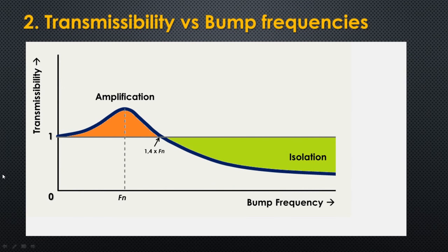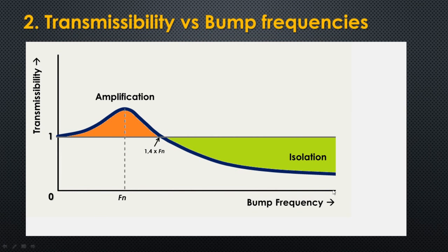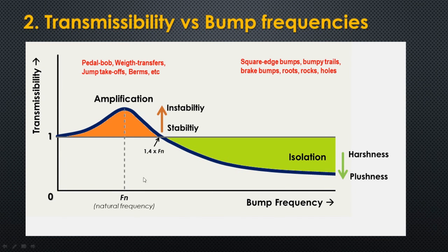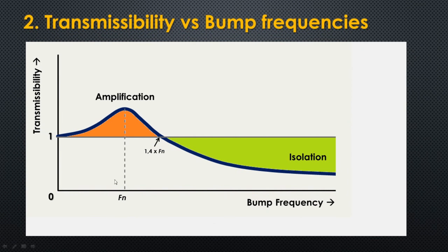This graph here is a textbook graph and it shows how the transmissibility of any suspension changes accordingly to the bump frequencies. As you can see, on very low bump frequencies the transmissibility is almost 1. If the bump frequency is very high, we get isolation and the transmissibility is almost 0. And at these special mid-frequency cases, the suspension will always amplify — the transmissibility peaks above 1.